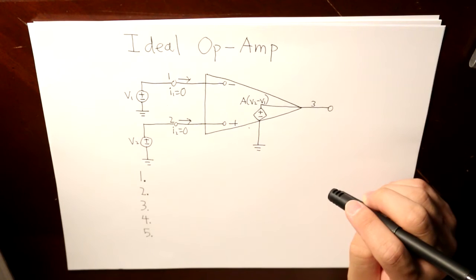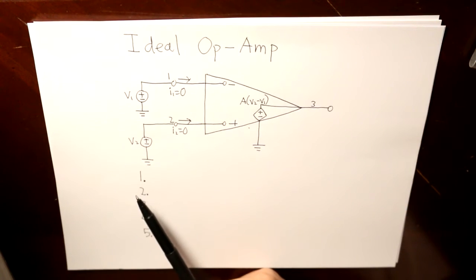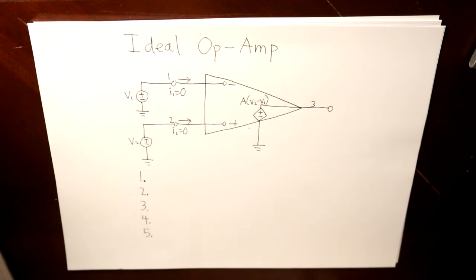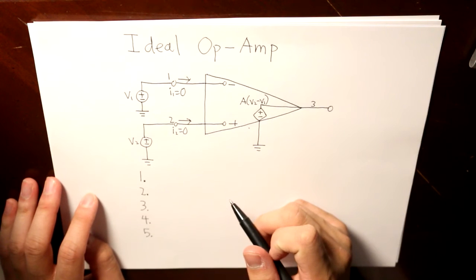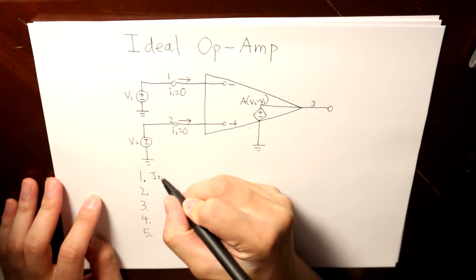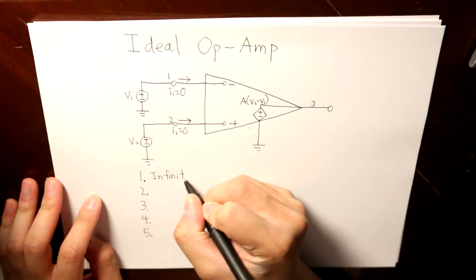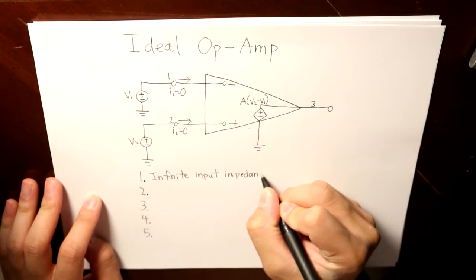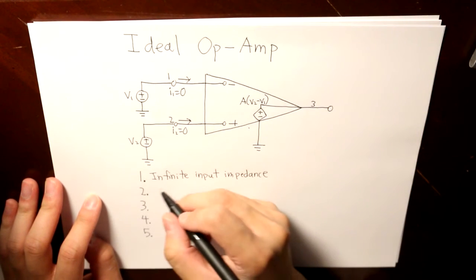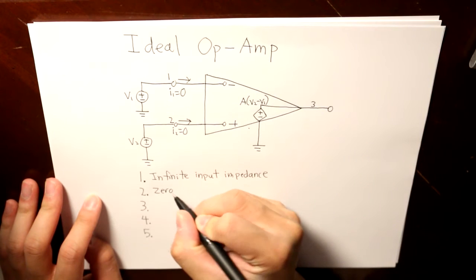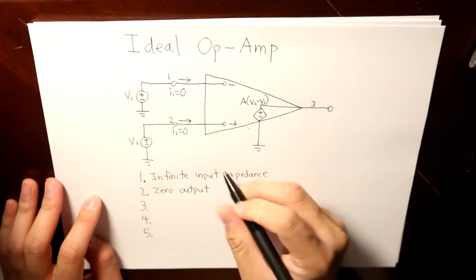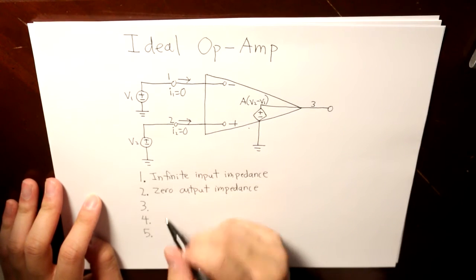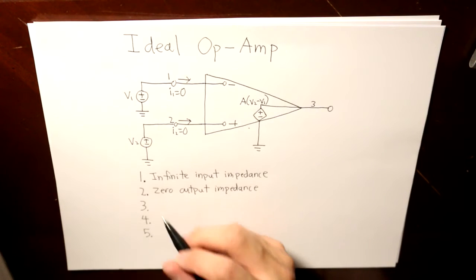There are essentially five characteristics that an ideal op amp has. The first characteristic is that it has infinite input impedance. Number two, it has zero output impedance.